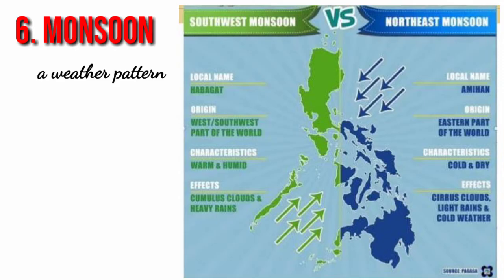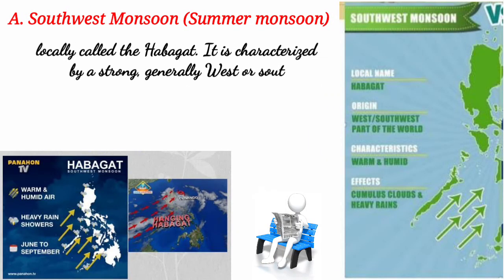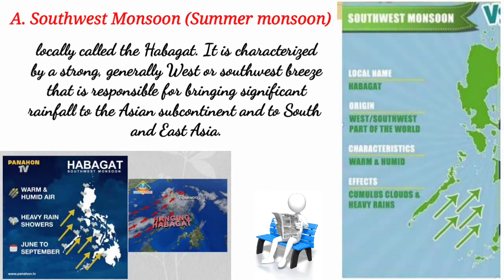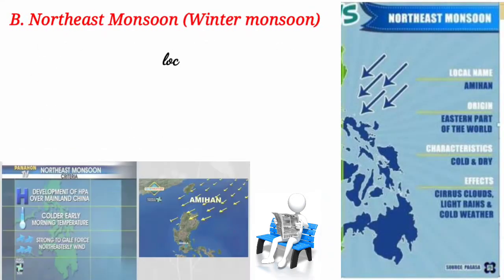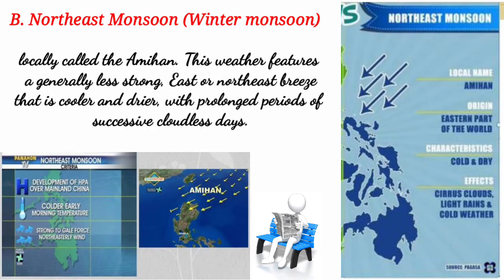Next we have the monsoon, a weather pattern. In the Philippines, we have the southwest monsoon and the northeast monsoon. The southwest monsoon, or summer monsoon, locally called Habagat, is characterized by a strong, generally west or southwest breeze responsible for bringing significant rainfall to the Asian subcontinent and to South and East Asia. The northeast monsoon, or winter monsoon, locally called Amihan, features a generally less strong east or northeast breeze that is cooler and drier, with prolonged periods of successive cloudless days.